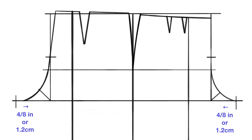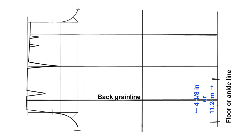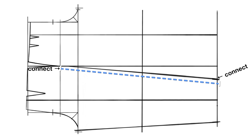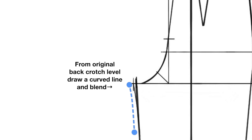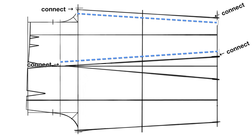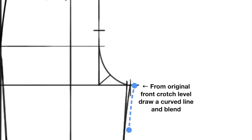Mark in 4/8 of an inch (1.2 centimeters) from both the back and front crotch levels. At the ankle line, from the back grain line mark out 4-4/8 inches (11.2 centimeters) on both sides. Connect a diagonal line from the 4/8-inch mark at the back crotch level down to the ankle line mark, and connect the other mark with a diagonal line blending towards the hip line. From the original back crotch level, draw a curved line blending towards the diagonal line. For the front trouser, at the ankle line mark out 4 inches (10 centimeters) from the front grain line for foot entry, connect diagonal lines using the same procedure, and from the original front crotch level draw a curved line blending towards the diagonal line.